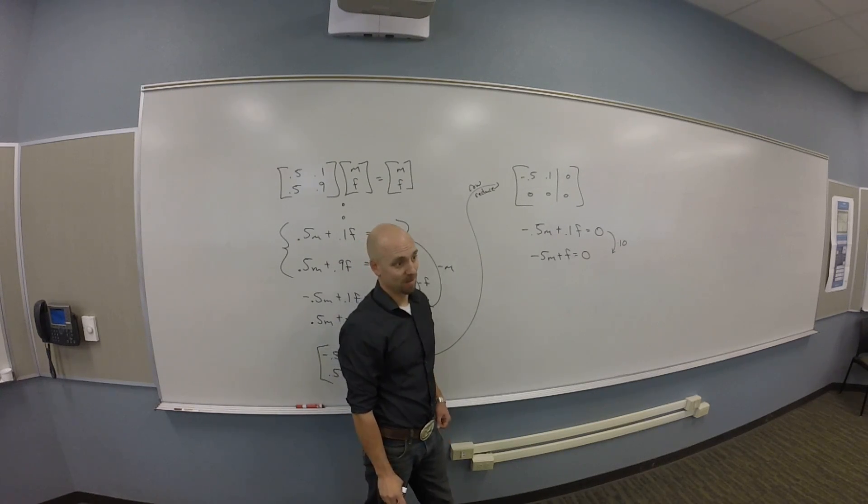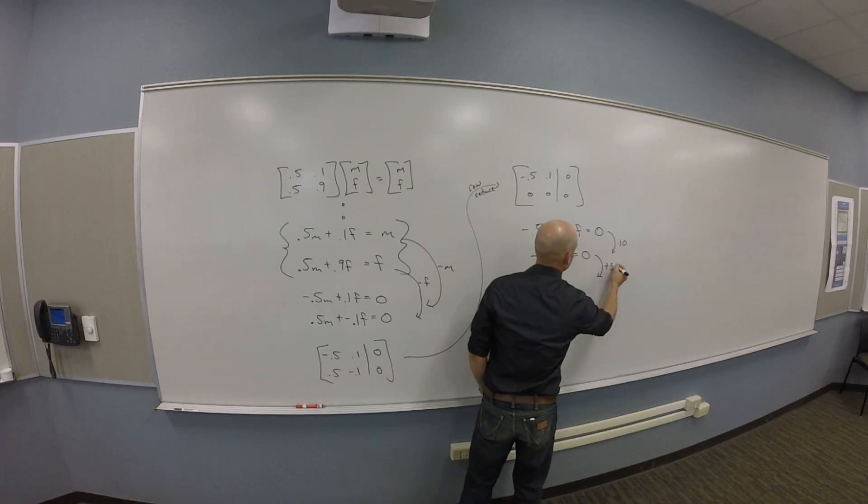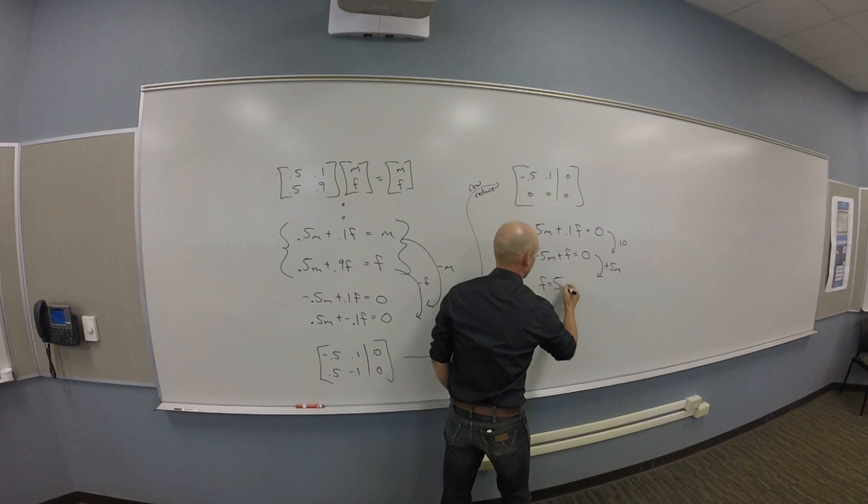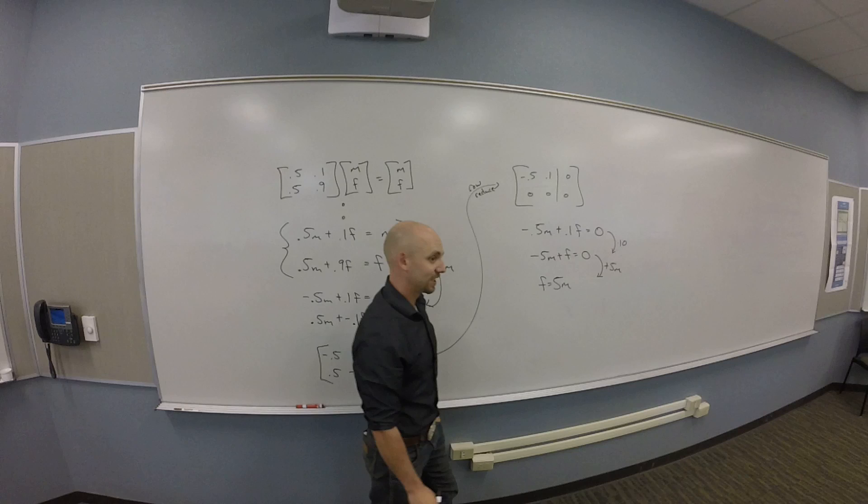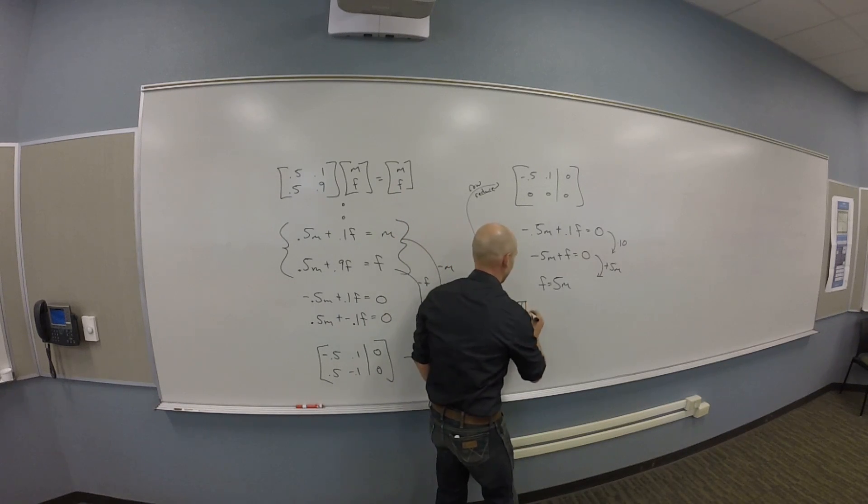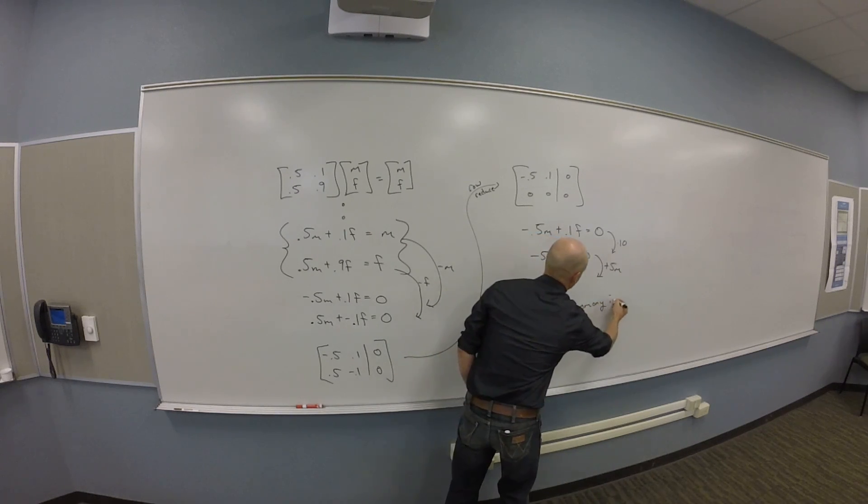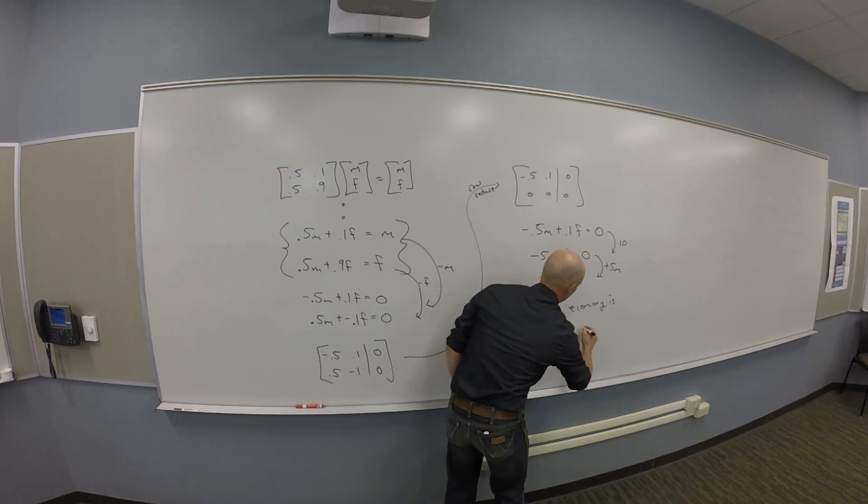What else could I do? You could just subtract 5 and move 5m to the other side. Okay. So let's add 5m to both sides. So I think that gives me f is 5m. And what that says is the fish economy is 5 times the merfolk one.